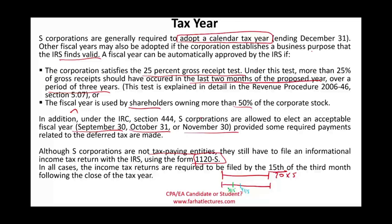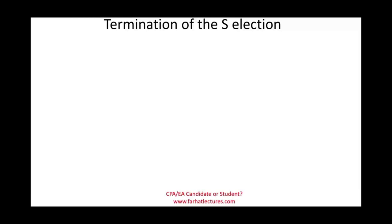Once the S corporation completes its return by March 15th, it has one month to issue the K-1 to shareholders, who then report that income or loss on their individual Form 1040 by April 15th. In practice, tax preparers focus on S corporation returns through March 15th, then shift focus to individual returns by the April 15th deadline.